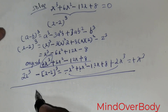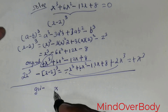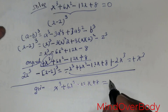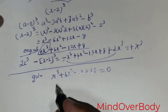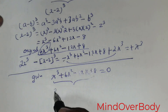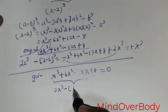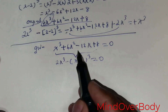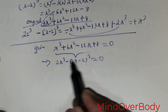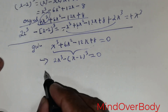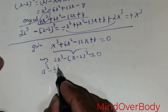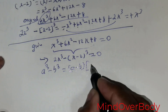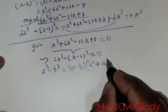So the given equation x cubed plus 6x squared minus 12x plus 8 equals 0 is rewritten as 2x cubed minus x minus 2 cubed equals 0. This is now in the form a cubed minus b cubed, which factors as a minus b times a squared plus ab plus b squared.